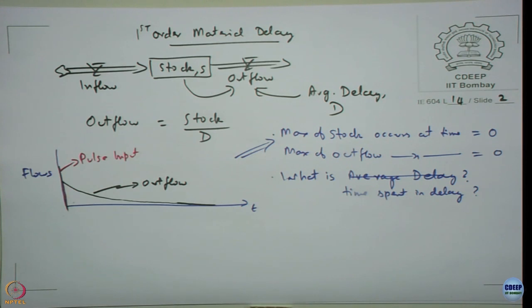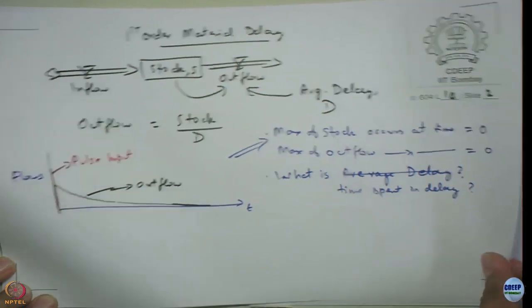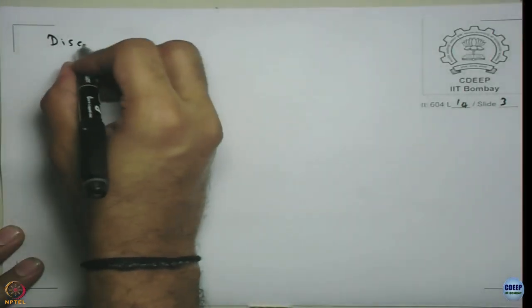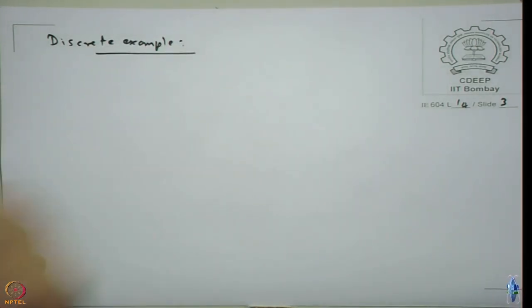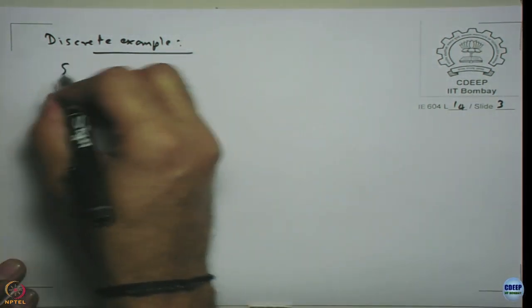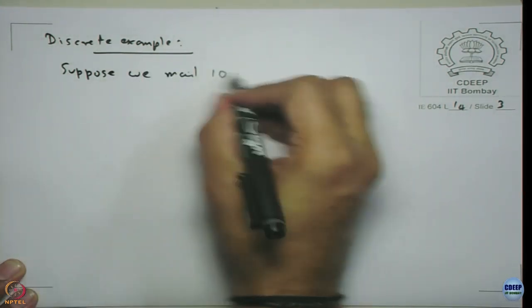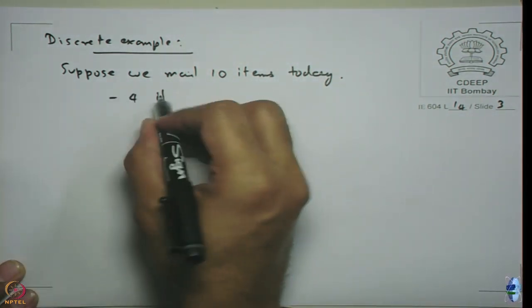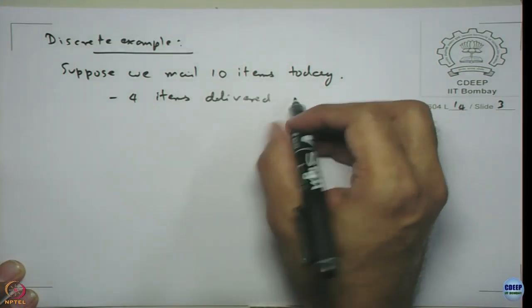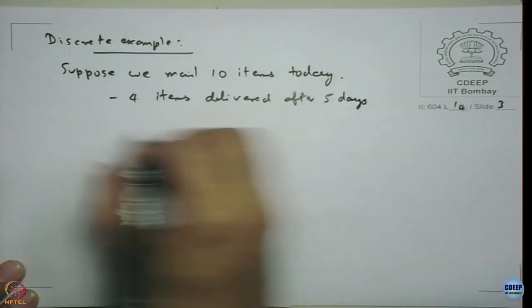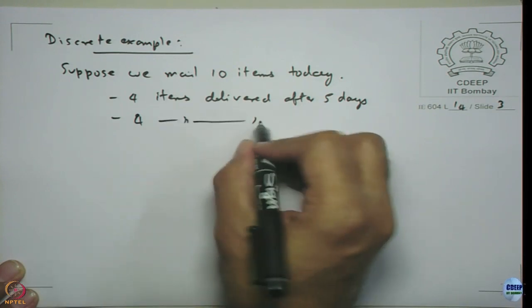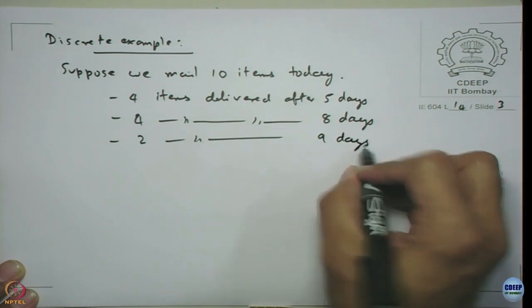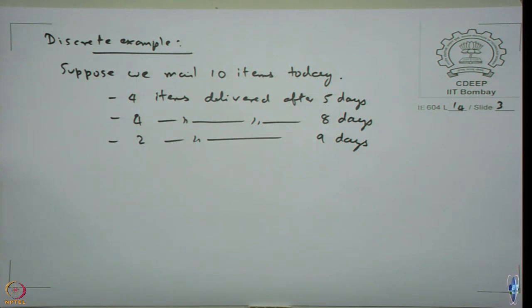When you have set of materials, how do we compute the average delay? Let us take a simple discrete example. Suppose we mail 10 items today: 4 items delivered after 5 days, 4 items delivered after 8 days and 2 items delivered after 9 days. You can assume it is delivered on the 5th day, on the 8th day and on the 9th day.